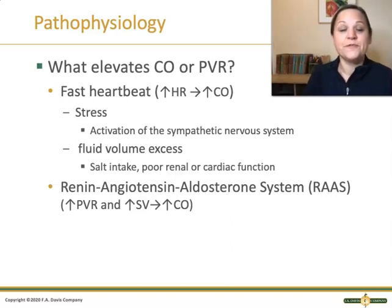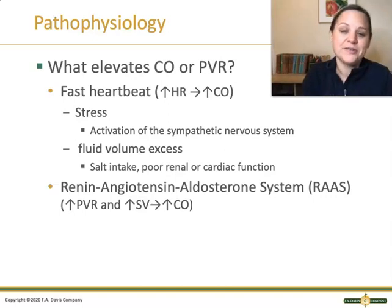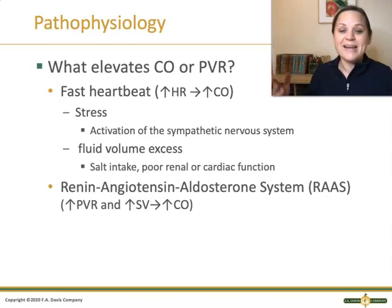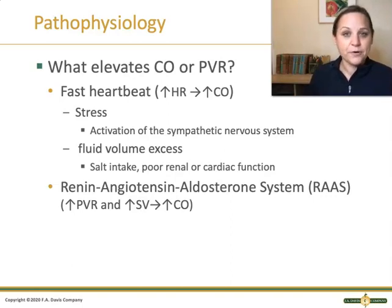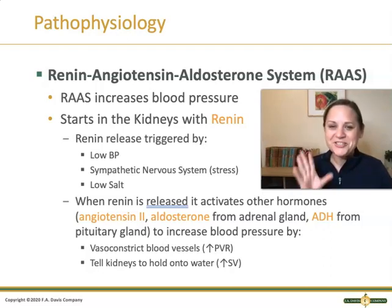In addition to fluid volume and stress, the renin-angiotensin-aldosterone system, or the RAAS system, also increases peripheral vascular resistance — squeezing down on those arteries — and increases stroke volume. We're going to talk about how this system increases peripheral vascular resistance and cardiac output, therefore impacting blood pressure. I'm going to introduce it first as words on a slide, and then demonstrate it with pictures.